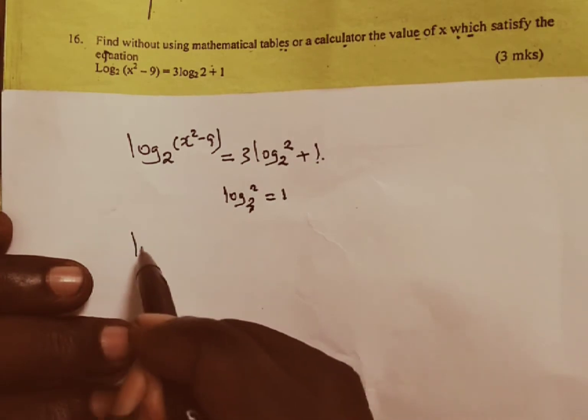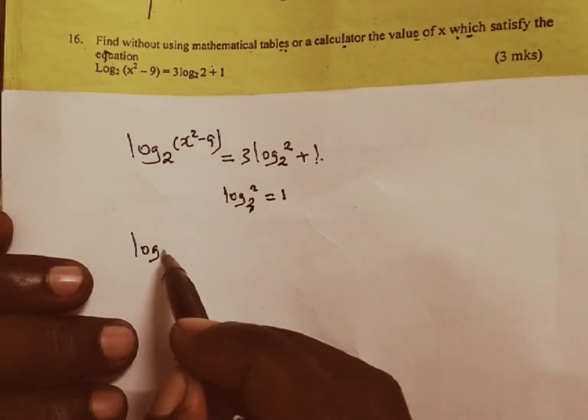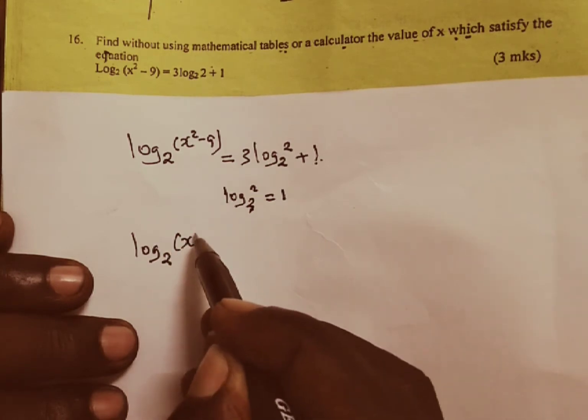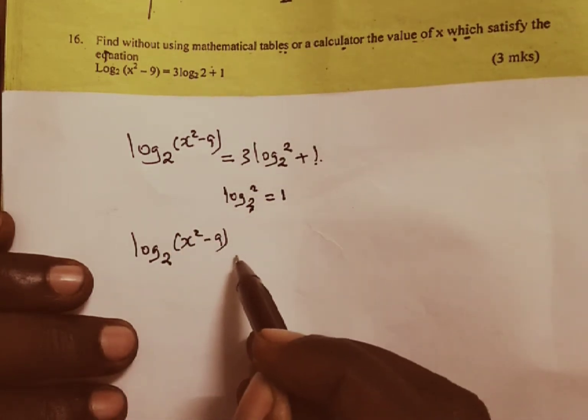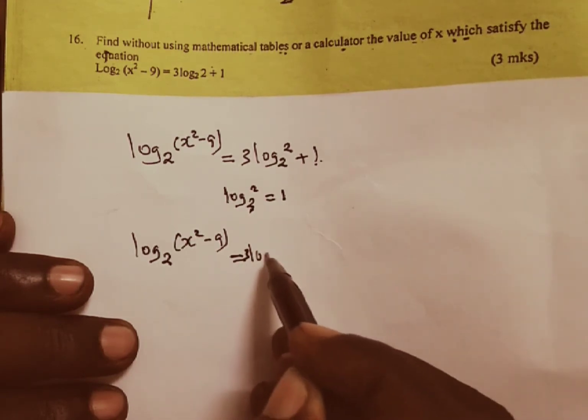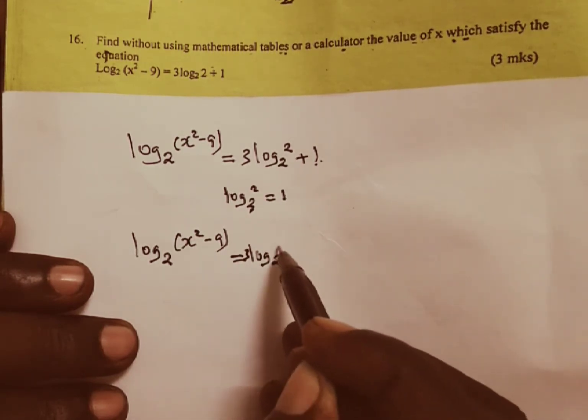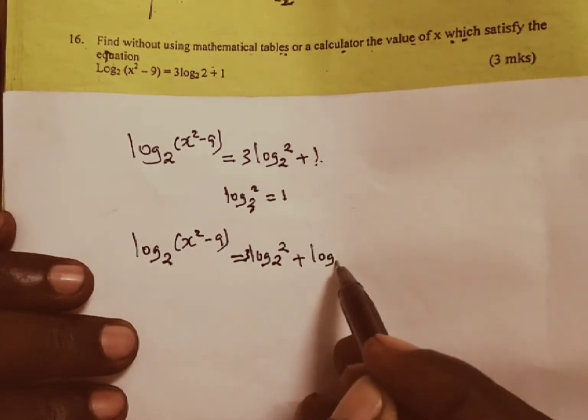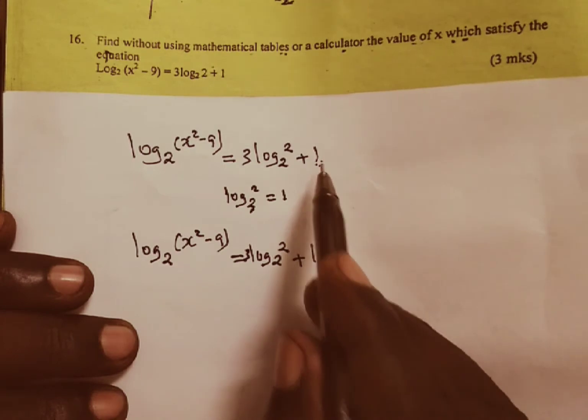Now we can move down and write our equation, that is log base 2, into we have x squared minus 9. This one is going to be equal to 3 into the log of base 2 power 2, plus now the log of base 2 power 2, which is equivalent to 1.